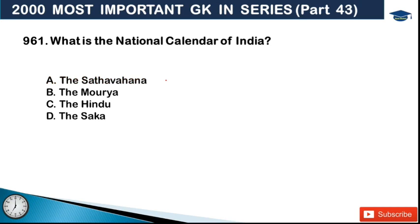Next: what is the national calendar of India? Our national calendar is option D, the Saka calendar. The Saka calendar is our national calendar. Its first month is Chaitra and the last month is Phalguna.